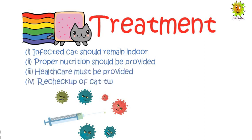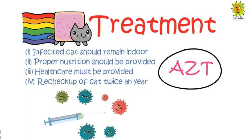Recheckup of the cat twice a year is recommended. Two antiviral therapies are used against FIV infection. The first is the antiviral drug AZT — the same drug used in humans against HIV. It cannot completely cure the cat, but in cases of severe signs and symptoms it can be recommended.